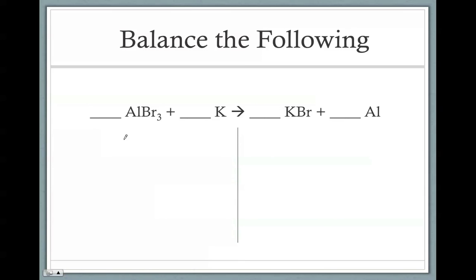All right, for this next one again, go ahead, write down Al, Br, K, and then write down the same order on the other side, Al, Br, and K for potassium. Go ahead and count them. We only have one Al. We have three bromine and one potassium. On the other side, we just have one of each. So this one's pretty straightforward because the aluminums right now are balanced, potassiums are balanced. So I can move on to my bromine non-metal.